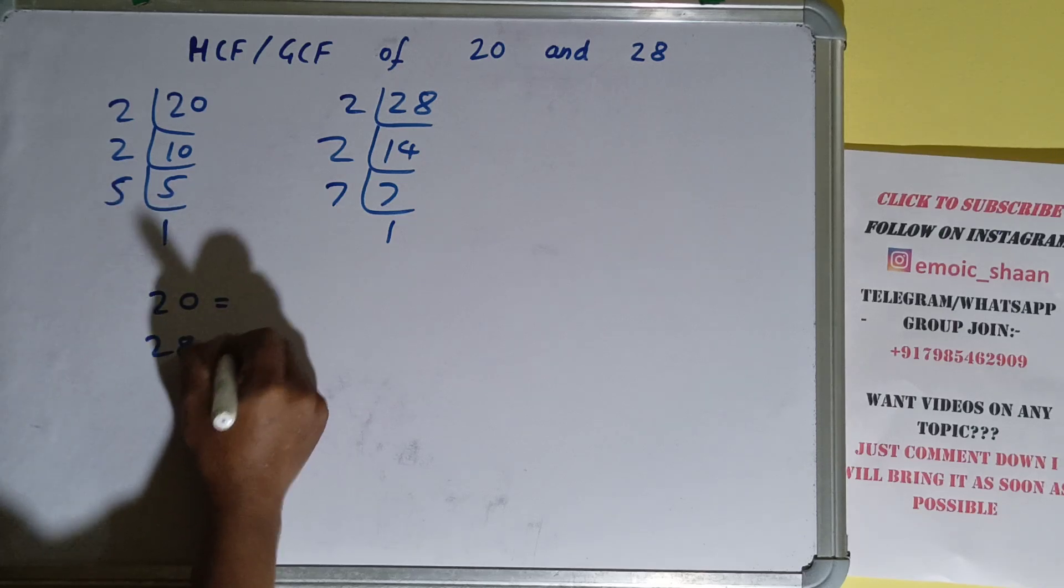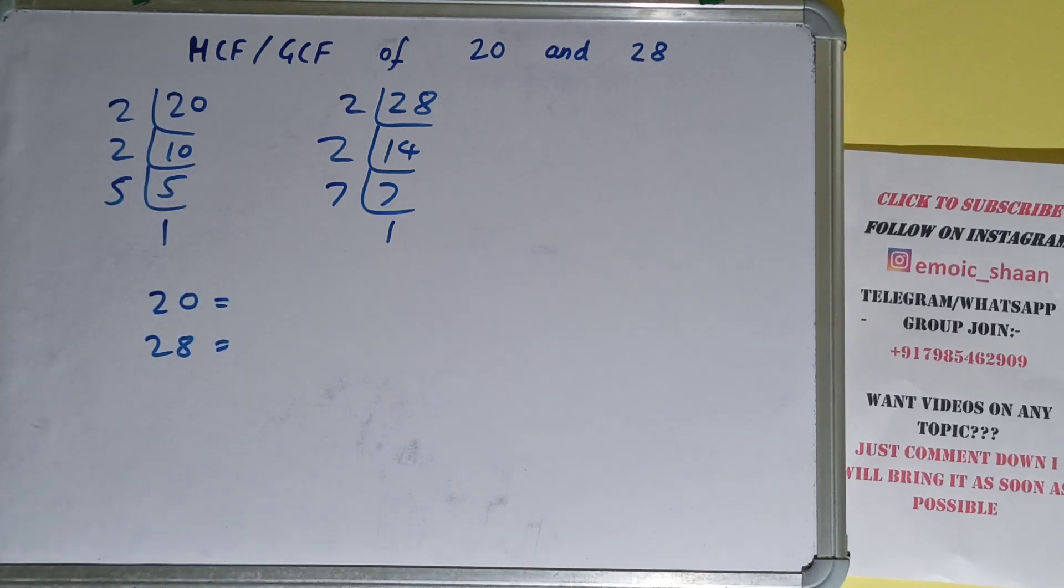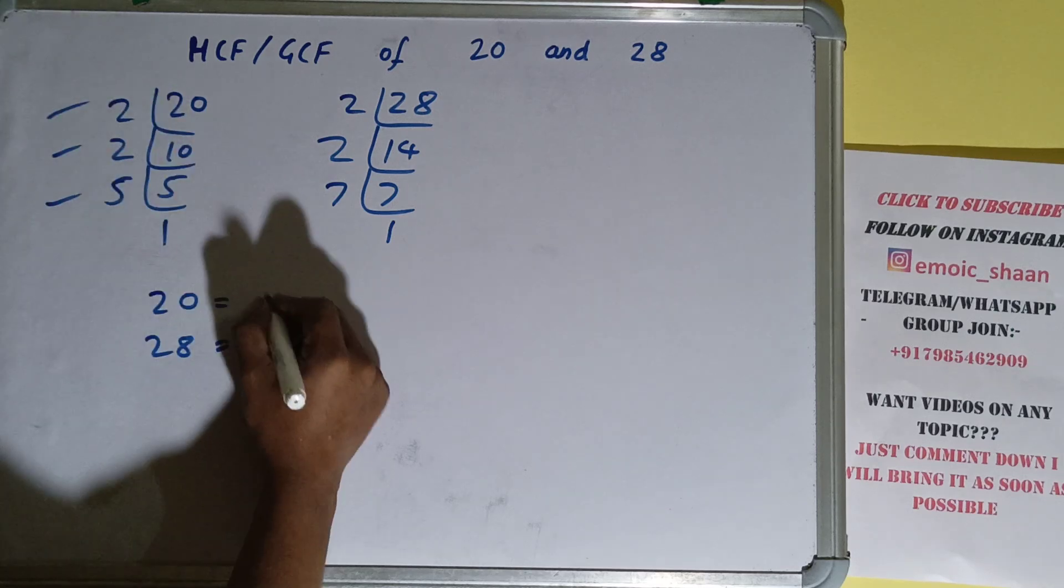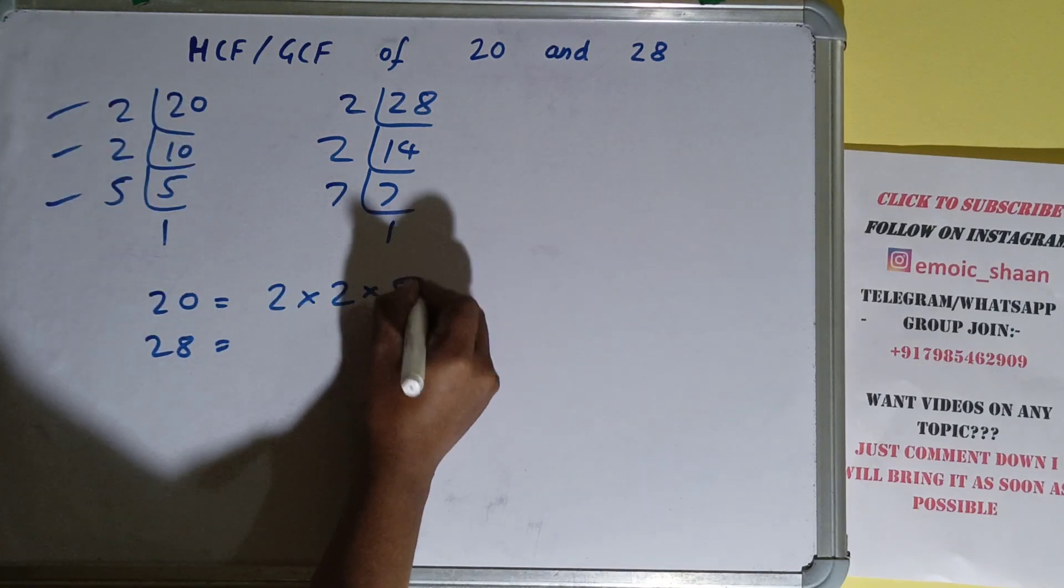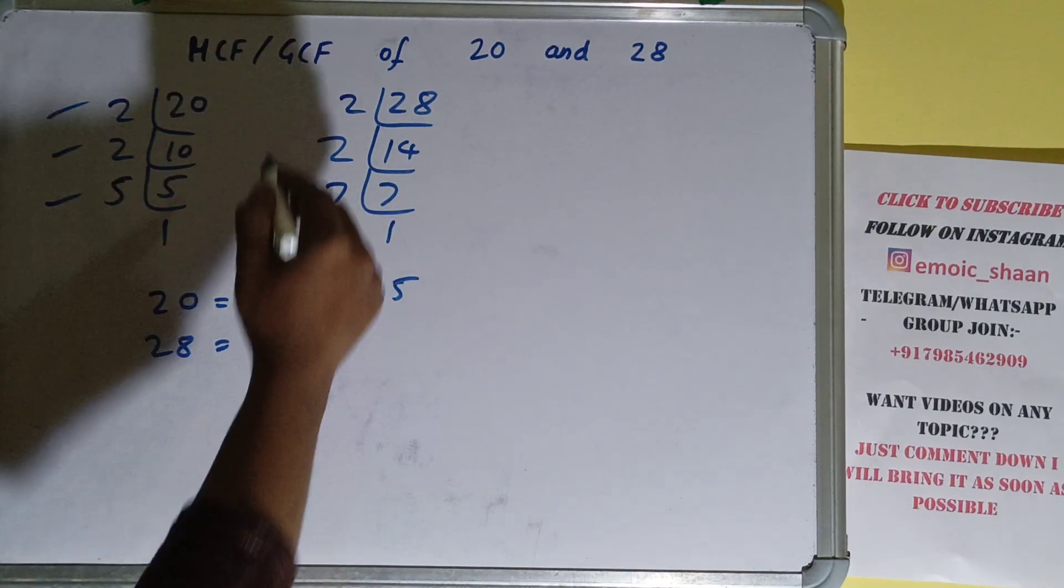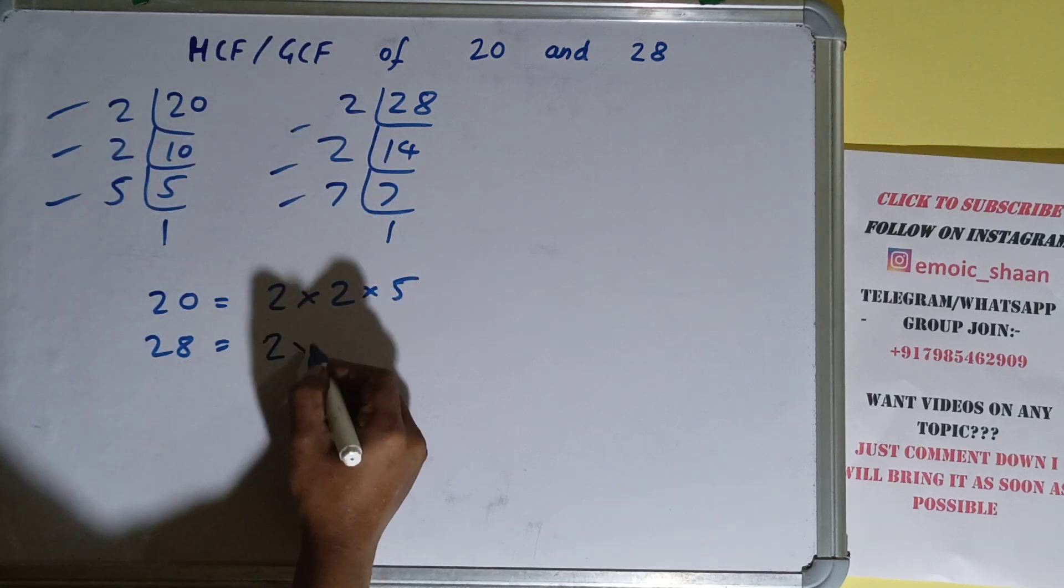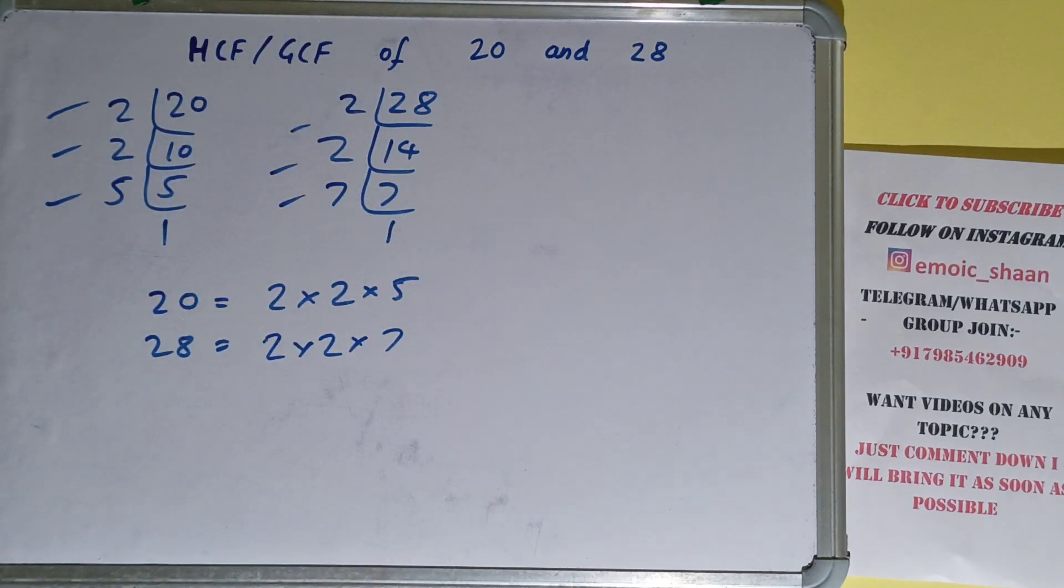The next thing we need to do is write down each number with their respective prime factors. So for 20, the prime factors are 2×2×5. For 28, the prime factors are 2×2×7.